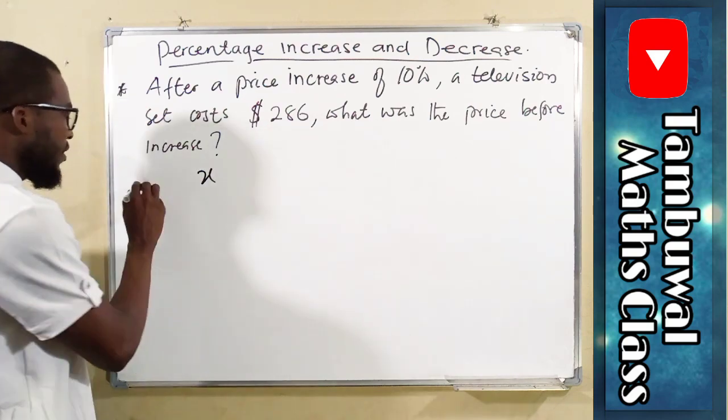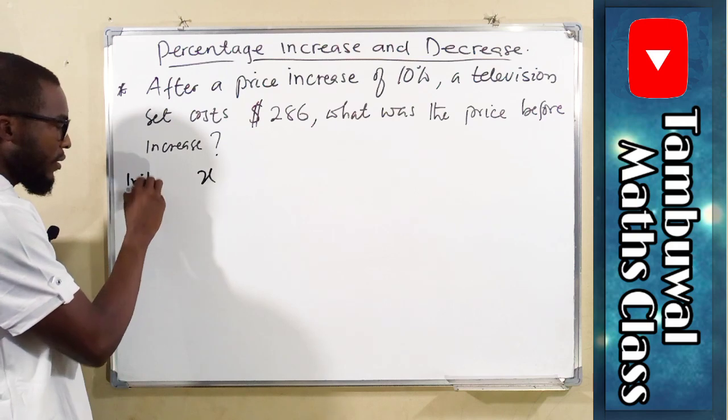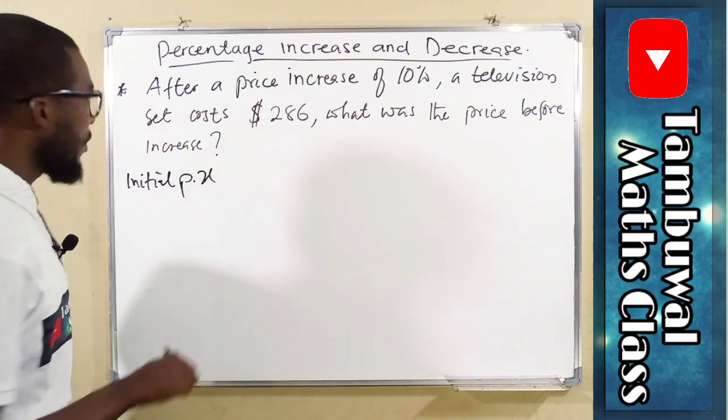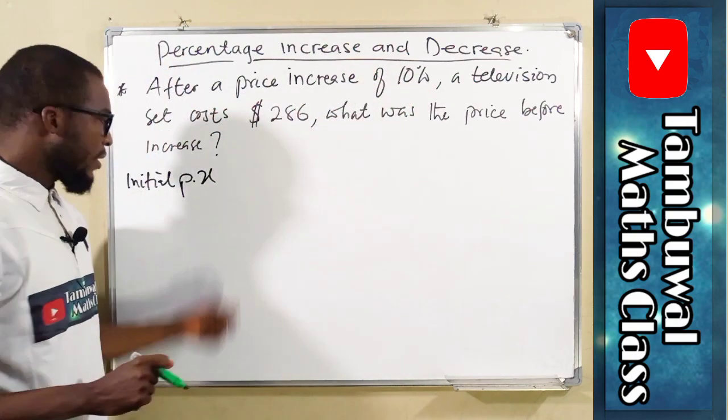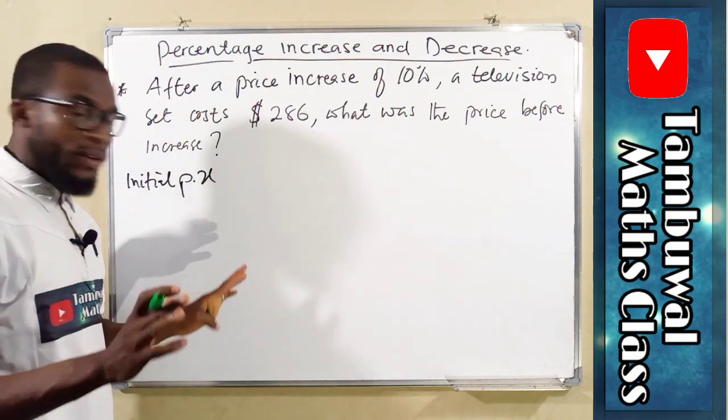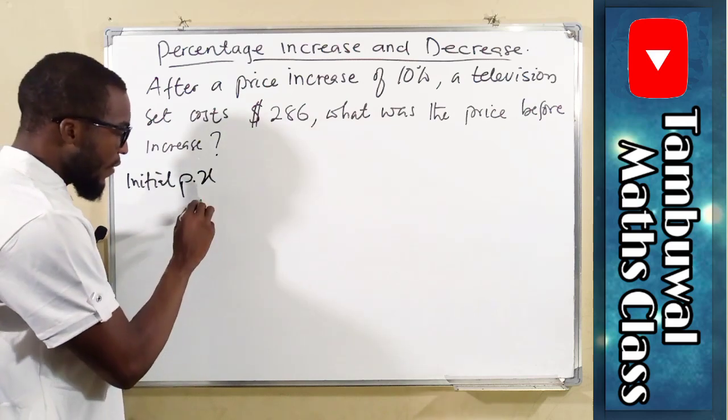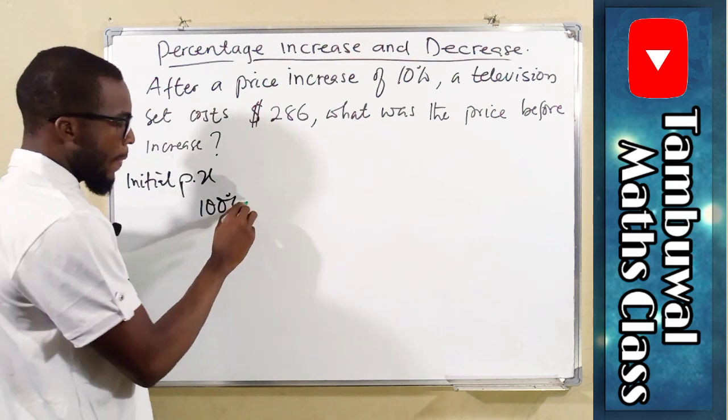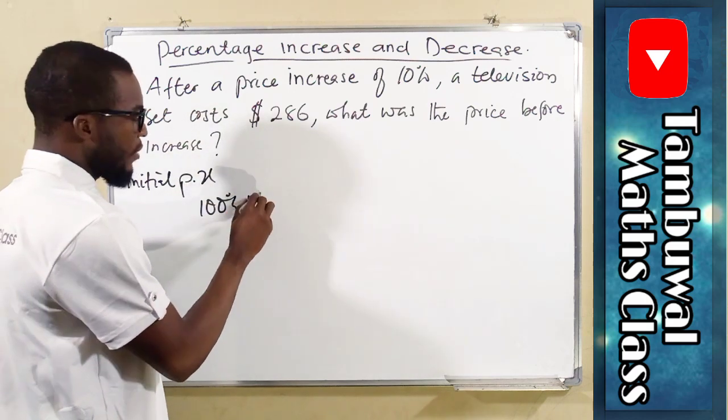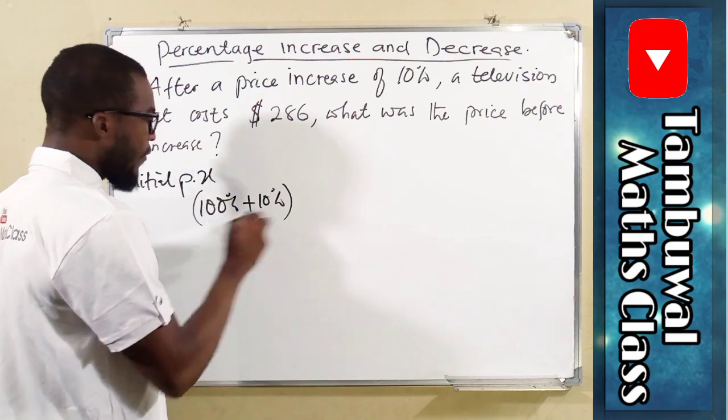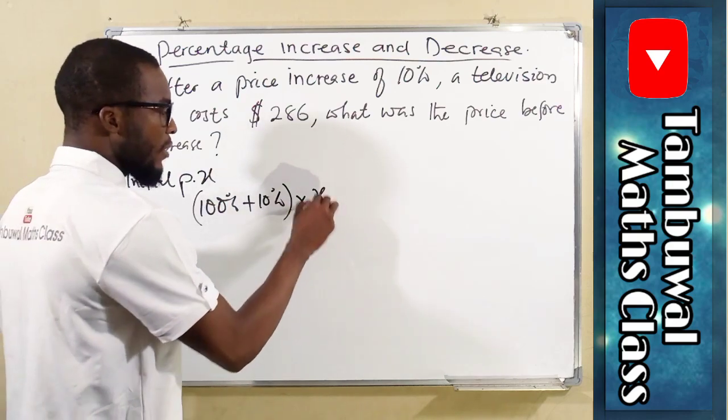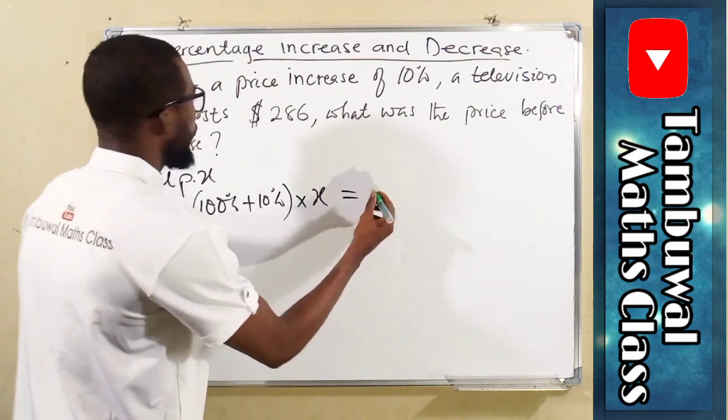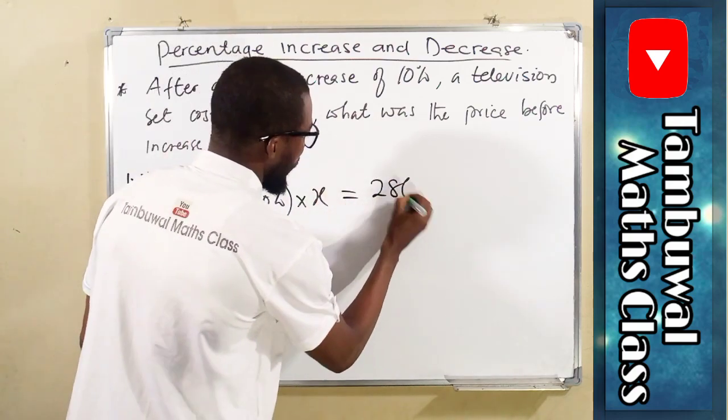So if this is the initial price, it was increased by 10%. Remember, this amount is 100%. So we have 100% plus 10% of this number X, which is the initial price, and this results to 286.